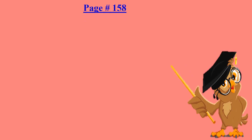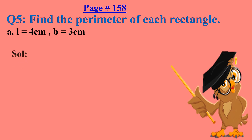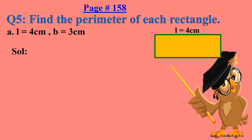Open your books, page number 158. We will solve question number 5, part A: Find the perimeter of each rectangle. Length is given as 4 centimeters and breadth is given as 3 centimeters. I am going to draw a rectangle here. Length is the horizontal part of the shape — L is equal to 4 centimeters. Breadth is the vertical part of the shape — B is equal to 3 centimeters.